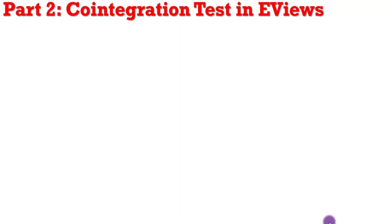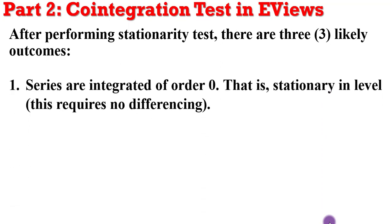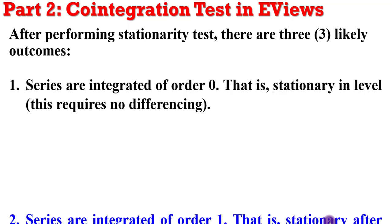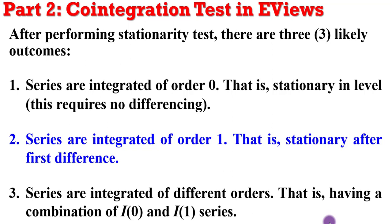Welcome to the second part of our series on co-integration tests in EViews. In part one, we said that after performing stationarity tests, you are likely to have three outcomes: the series are integrated of order zero (level stationary), or they are first-difference stationary (integrated of order one), or the series are integrated of different orders, having a combination of I(0) and I(1) series.